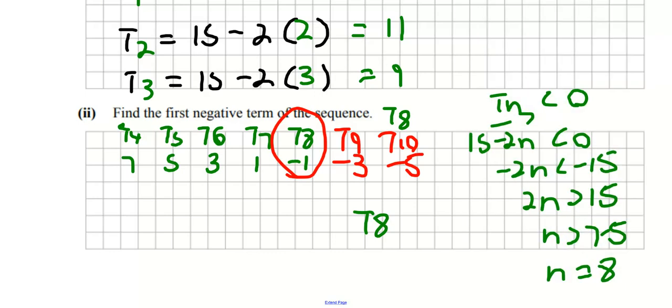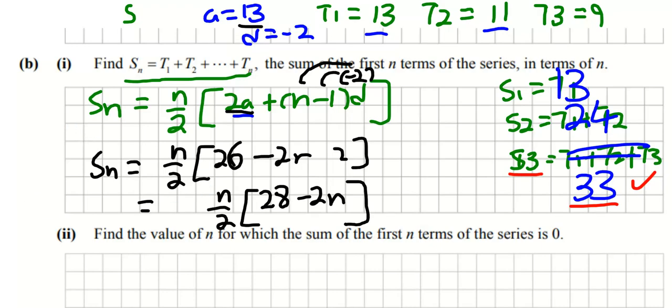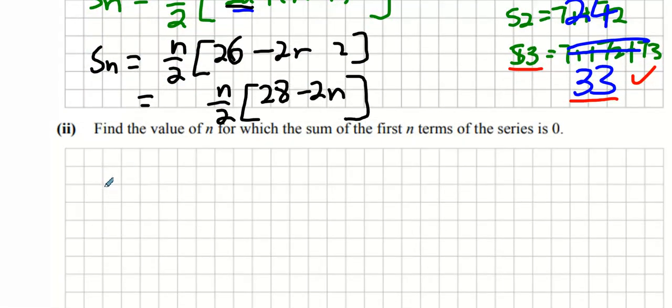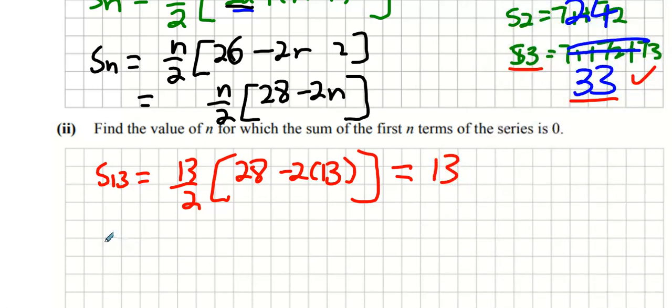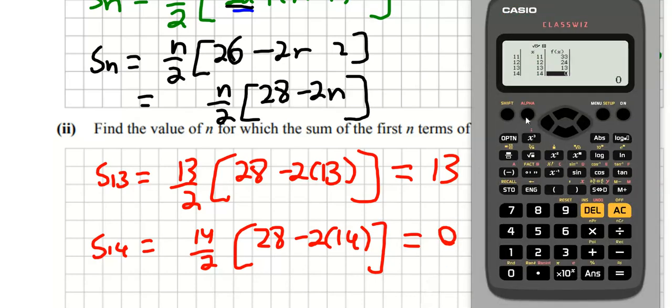Okay, now you can do this two ways, you can do trial and error which gets you some marks. So what you can do is you can argue that S13, if we use 13 terms it'd be 13 over 2 into 28 minus 2 times 13, you could put that into your calculator and show that it equals 13. Then you go S14 which is 14 over 2 into 28 minus 2 times 14, and you can prove that that equals zero.